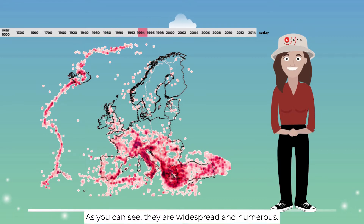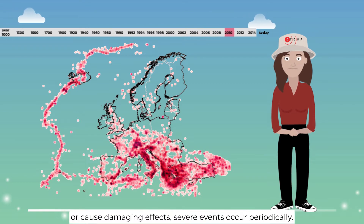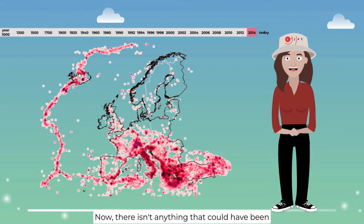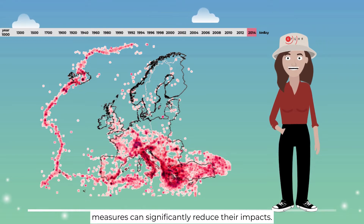As you can see, they are widespread and numerous. And while most are too small to be felt or cause damaging effects, severe events occur periodically. Now, there isn't anything that could have been done to prevent these earthquakes, but the right measures can significantly reduce their impacts.